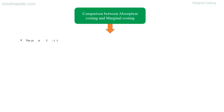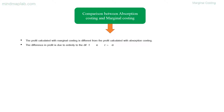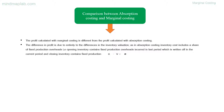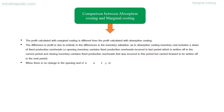Comparison between absorption costing and marginal costing: The profit calculated with marginal costing is different from the profit calculated with absorption costing. The difference in profit is due entirely to differences in inventory valuation. In absorption costing, inventory cost includes a share of fixed production overheads — opening inventory contains fixed production overheads from the last period written off in the current period, and closing inventory contains fixed production overheads incurred this period carried forward to the next. When there is no change in opening and closing inventory, exactly the same profit will be reported using both methods.